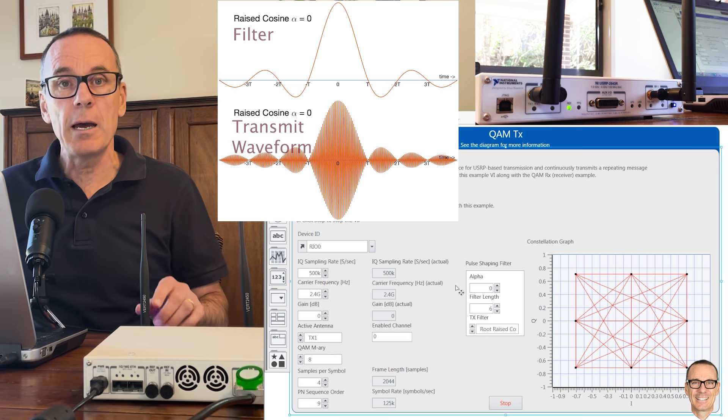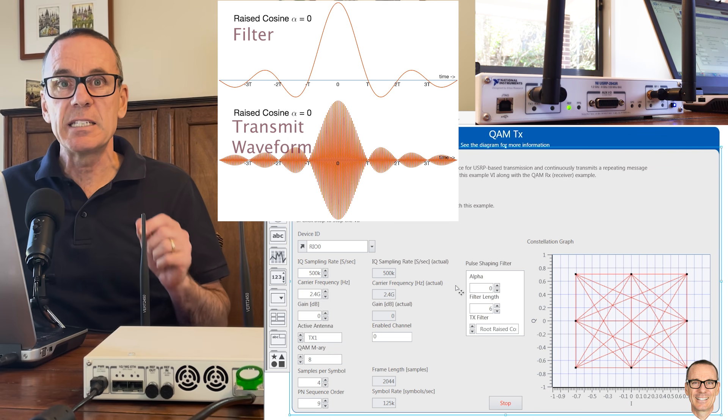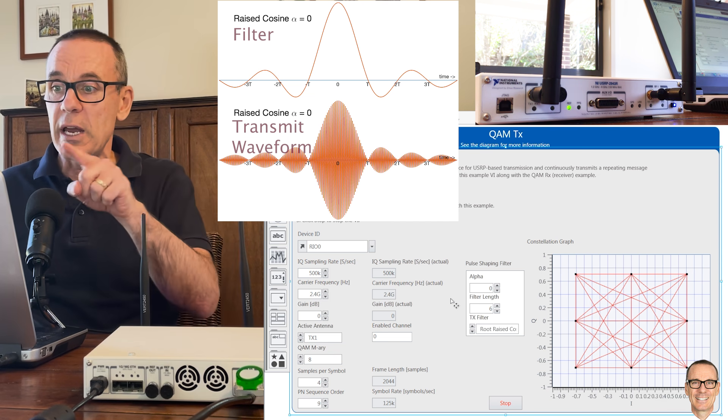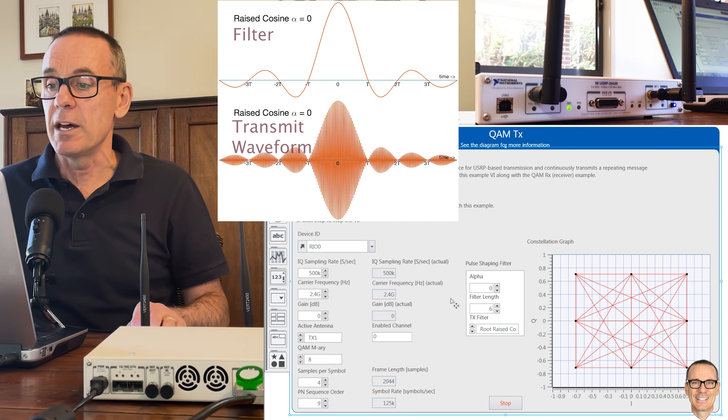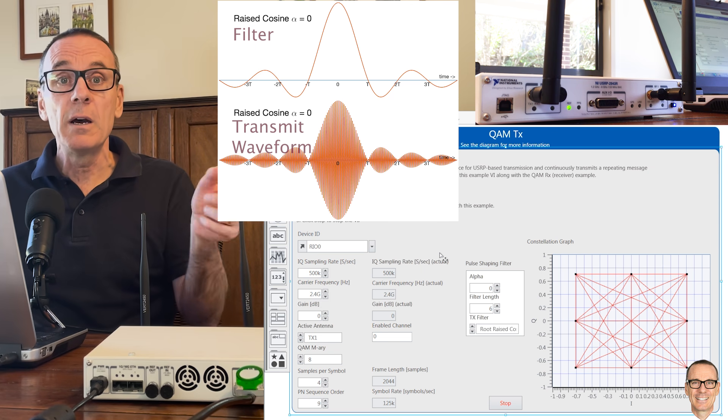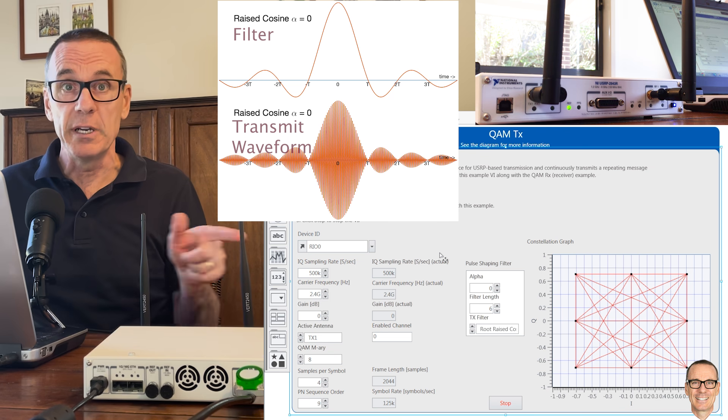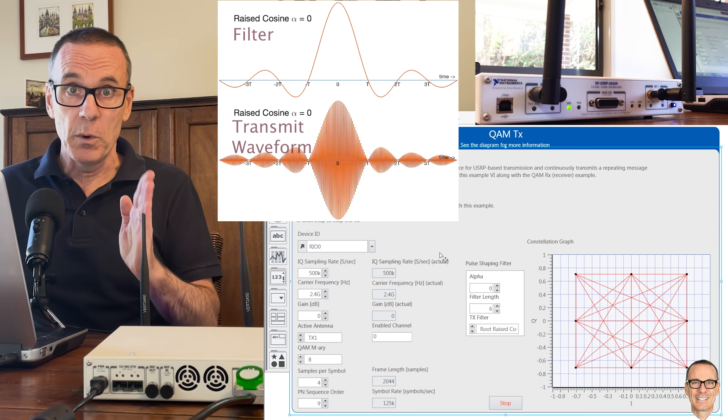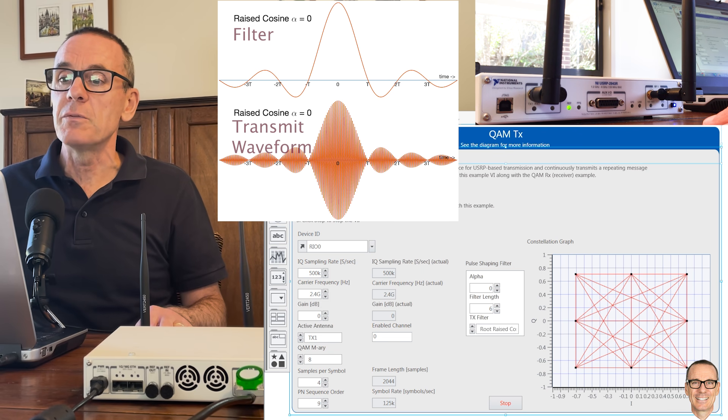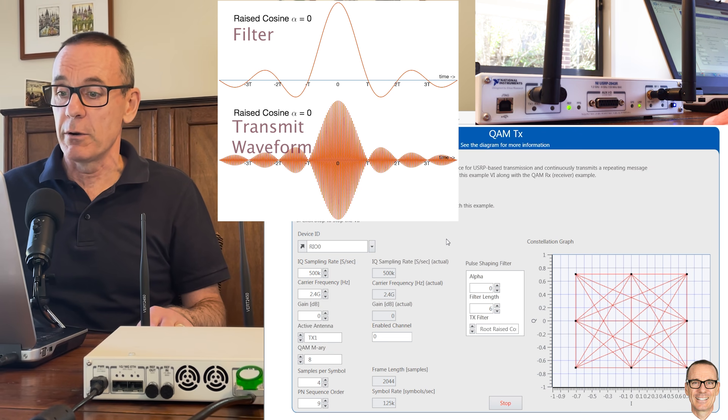So here we're going to start with an alpha of zero and what that means is we've got an exact sinc function in the time domain. So instead of having the square function before where we turn our data on and off exactly abruptly with a square, we're now using a sinc function which is spreading out into the neighboring symbol times but it's doing it in a way so that it doesn't affect those symbol times. And now if we play it we'll see what the effect is on our constellation diagram at the transmitter.